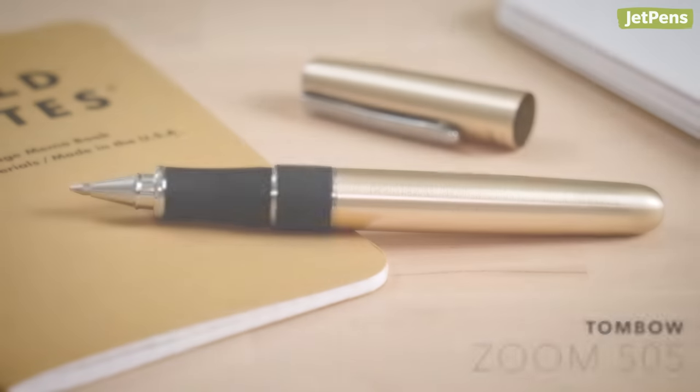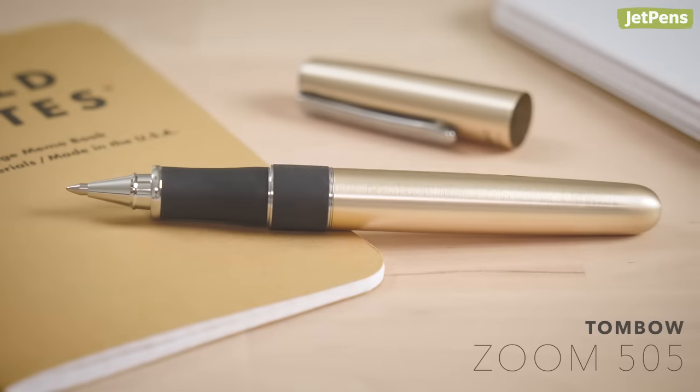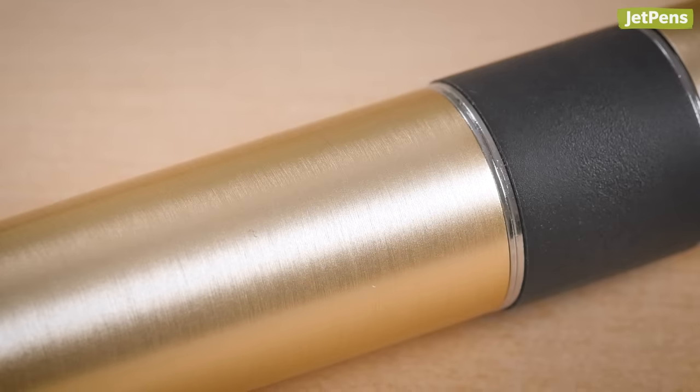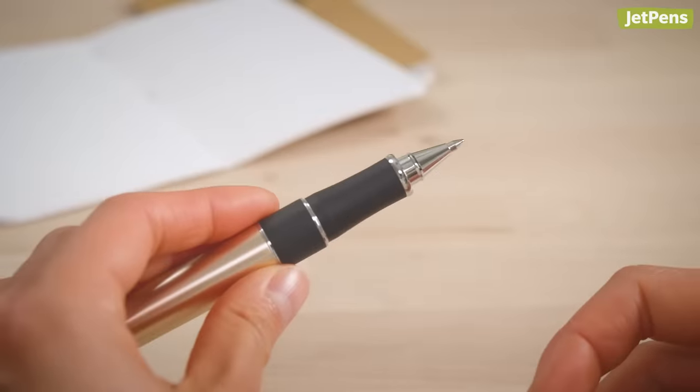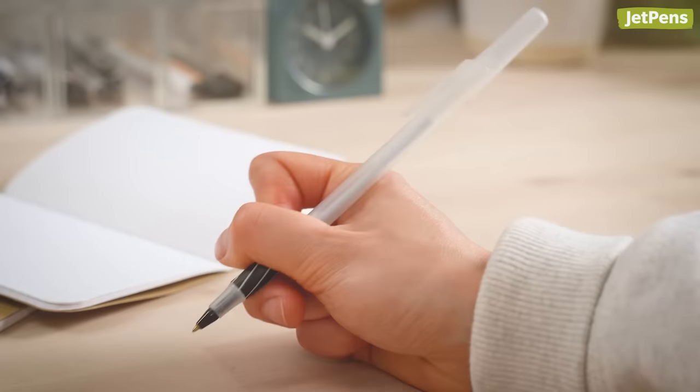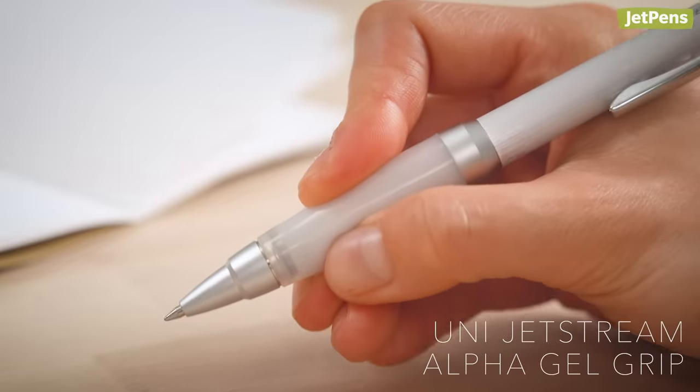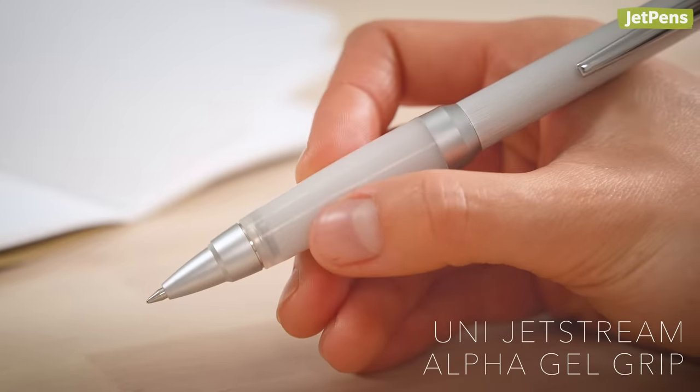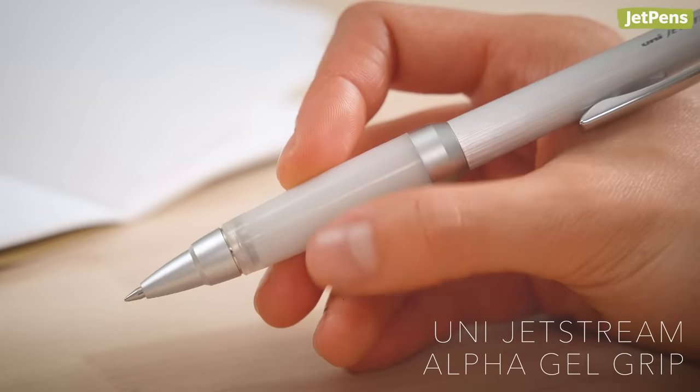The Tombow Zoom 505 is one of our favorite ergonomic pens. It has a balanced aluminum body and wide rubber grip section that makes it exceptionally comfortable in the hand. Those who tend to squeeze their pens should pick up the UniJetStream Alpha Gel Grip instead. Its ultra-soft grip supports your fingers with plush silicone.